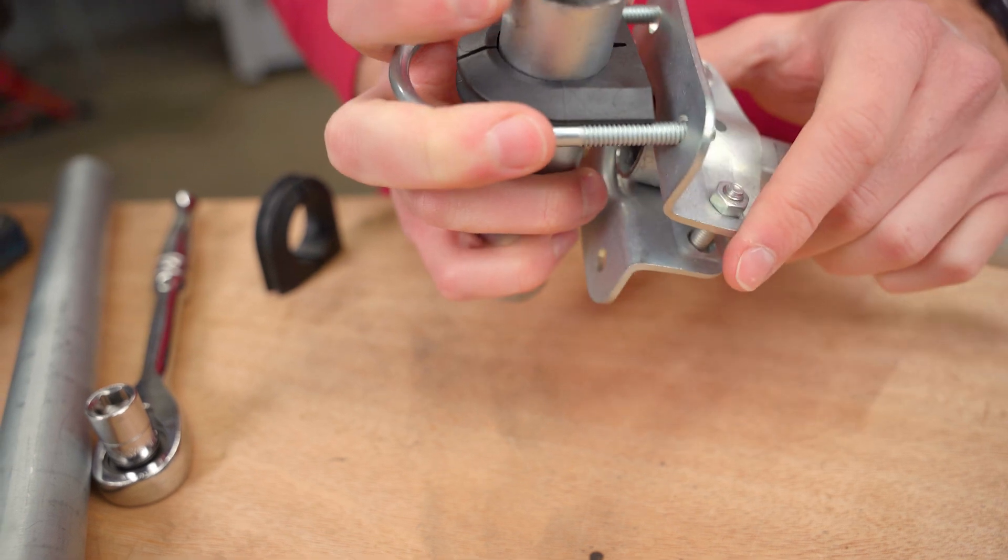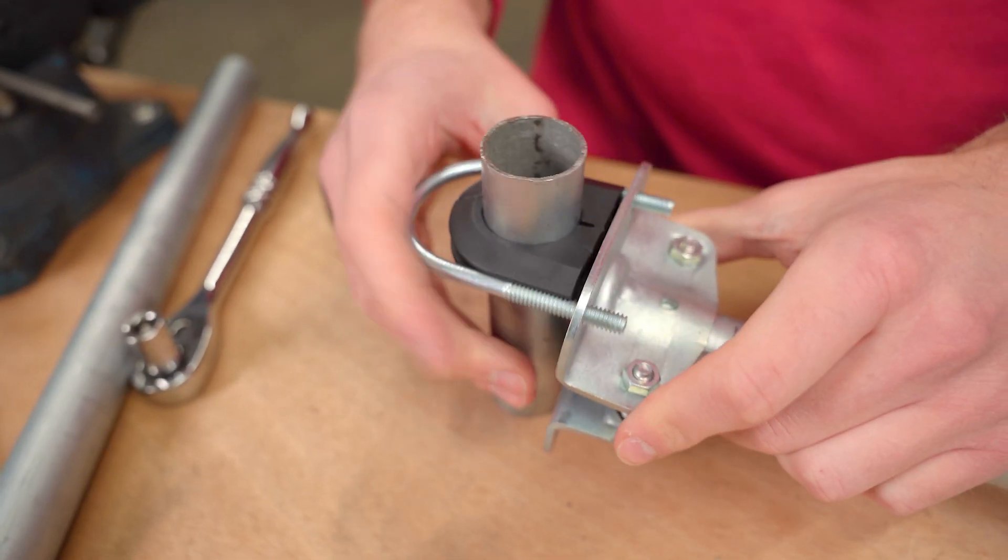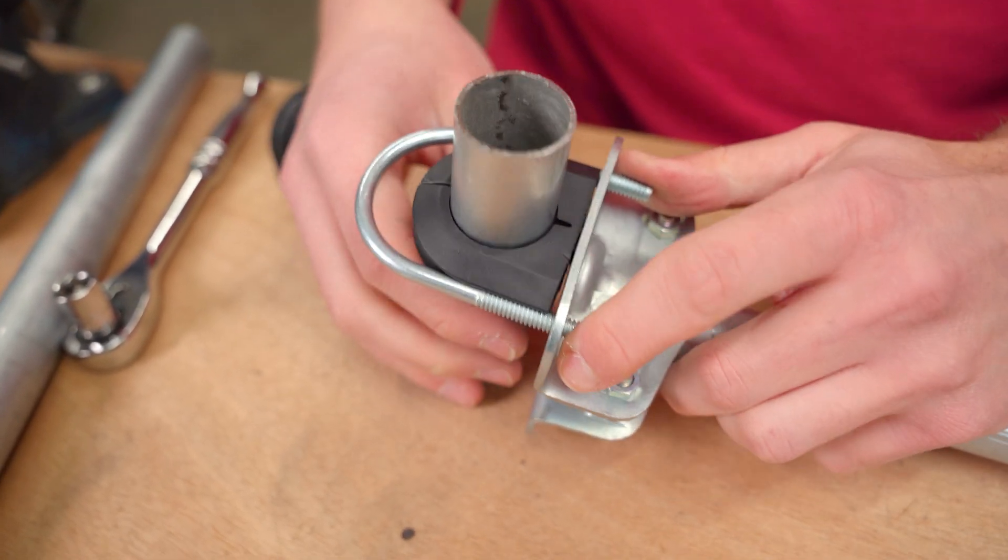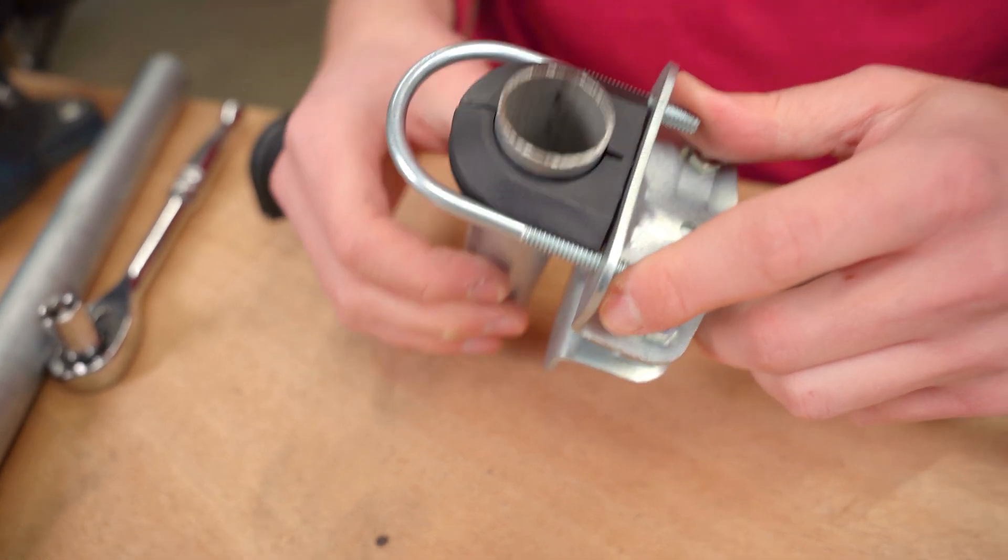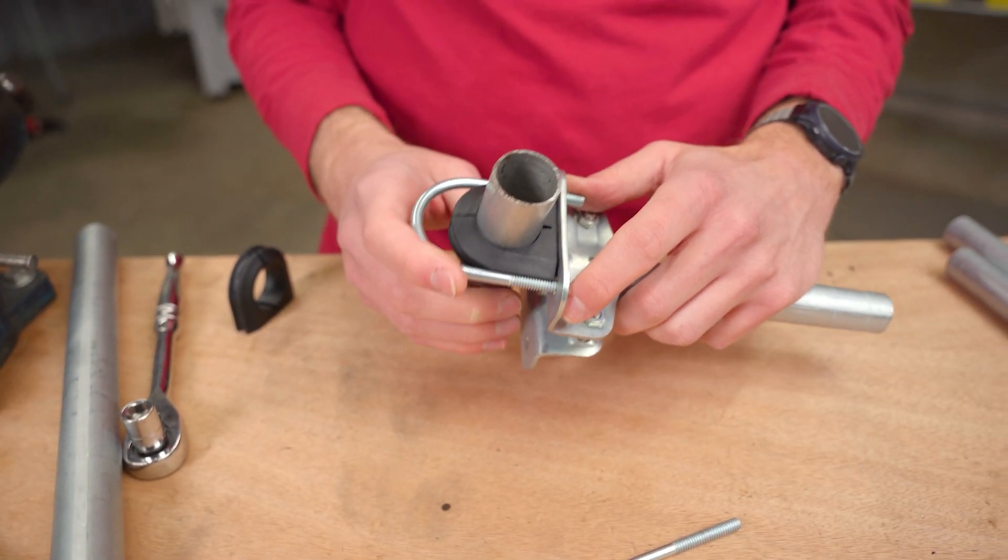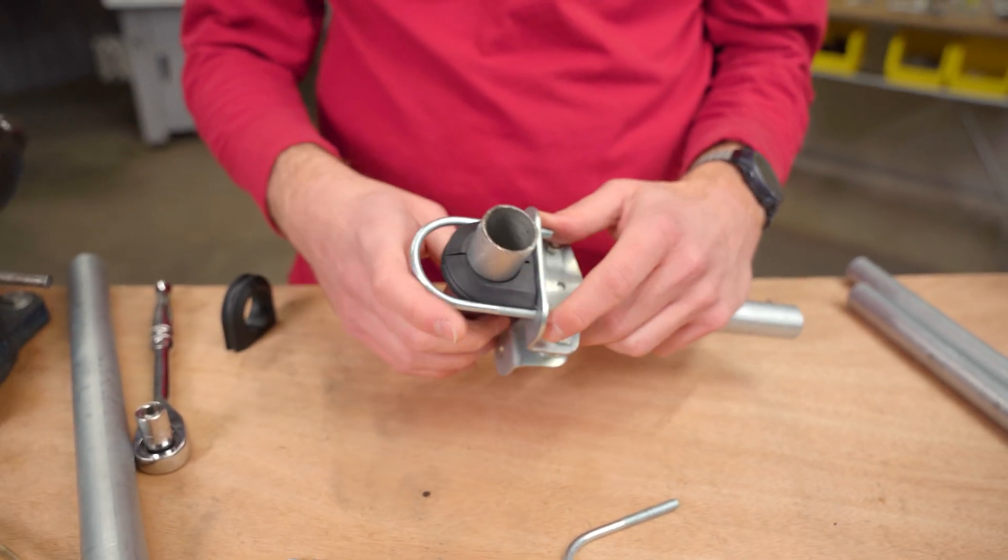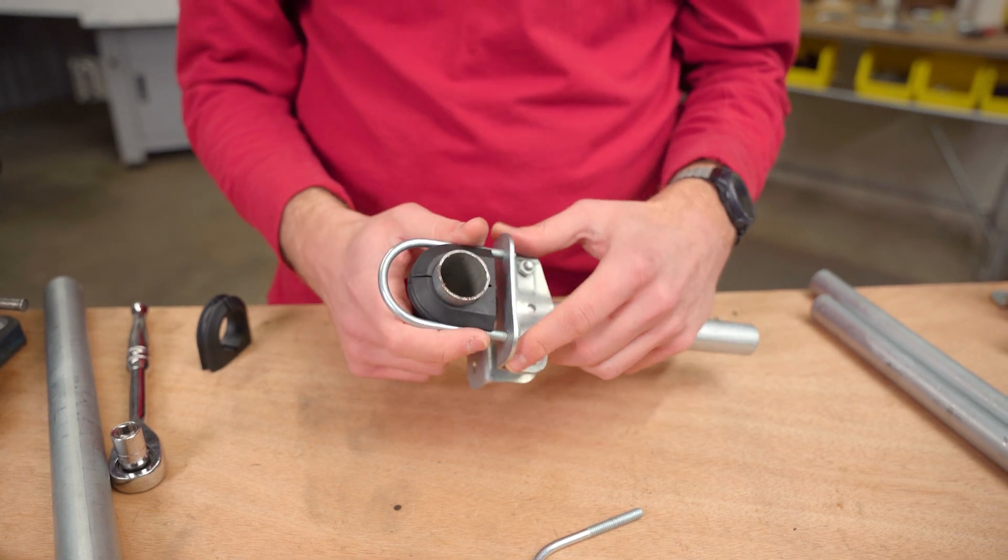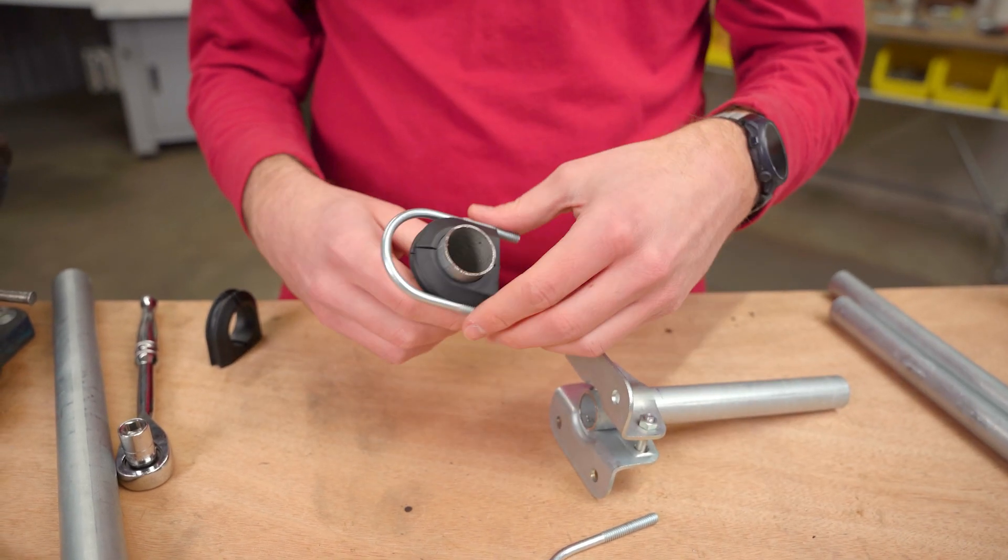Then you secure it down between the two U-bolt halves there and then you have a vibration dampener. Now this specifically only fits one-inch EMT conduit and that'll continue to close up once you tighten this down, but we were also playing around with that idea and thought it would be cool if we could get other blocks for other sizes.